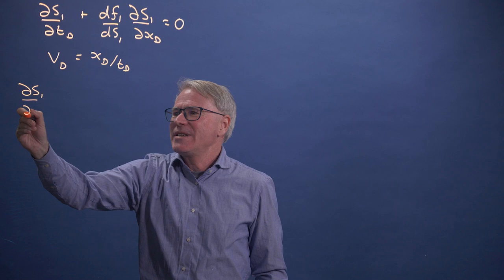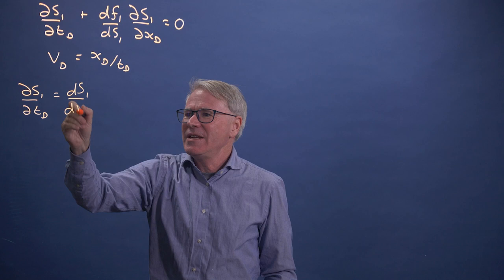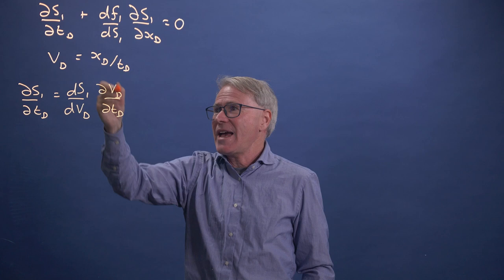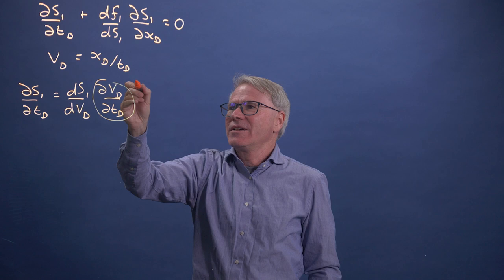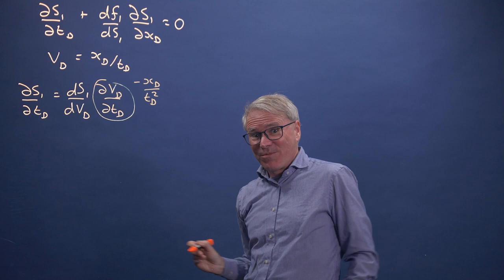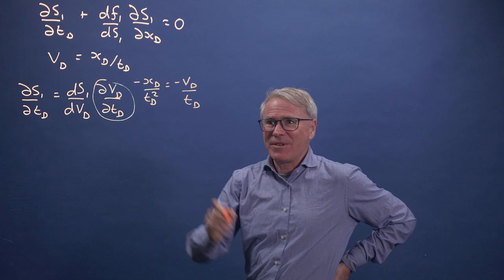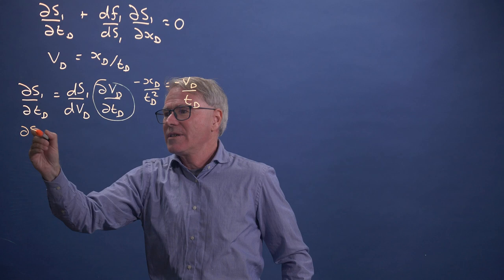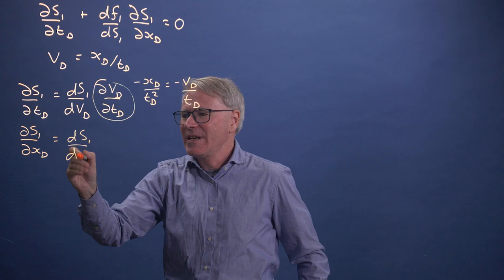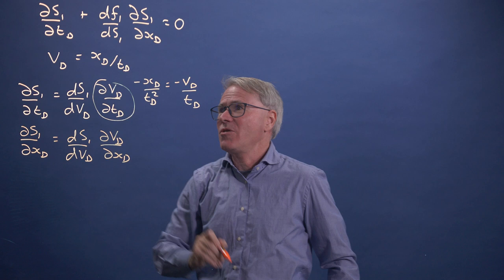Let's do the change of variables. dS1 by dTD can be written as dS by dVD times dVD by dTD, and that's at constant X. If we look at this, it's minus x over tD squared. We're going to write this as minus VD over tD. We've got the same for dS1 by dXD: dS1 by dVD times dVD by dXD, and that's at constant time, and that's just going to be 1 over tD.